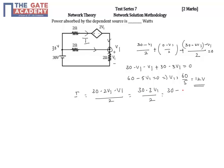30 minus 3v1 by 2. So this is minus 6... sorry, this is 30 minus 36 by 2, which is minus 3 amperes.